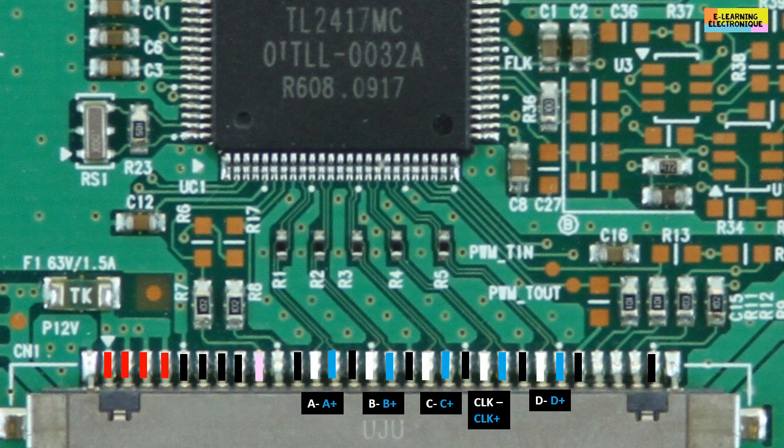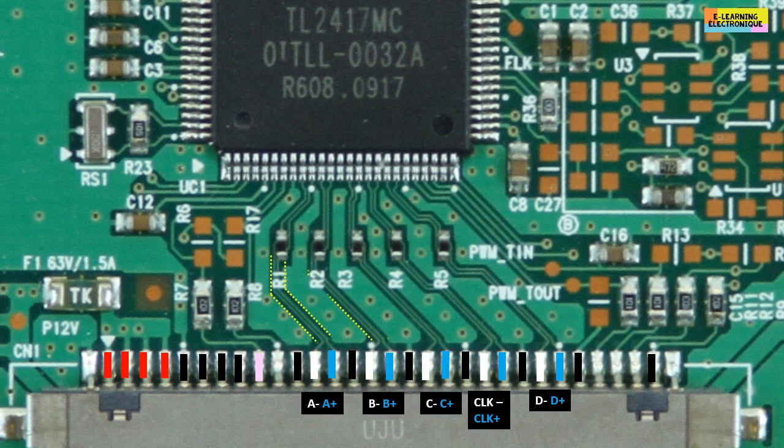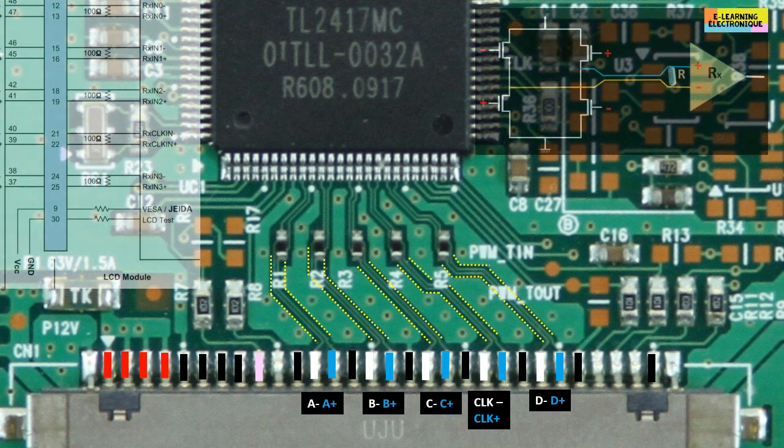Before finishing, notice on this TCON board the existence of five pairs of conductive tracks, reserved for the transmission of the video signal and the clock signal that accompanies it. Each pair of tracks ends up on a 100 ohms resistor.